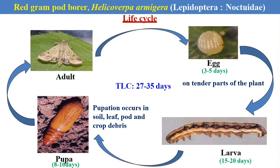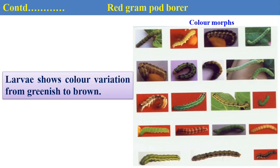The caterpillar or larva is the damaging stage; it attacks on different plant parts. After development, the larva goes into pupation, which occurs in soil as well as in leaf folds and crop debris. A typical characteristic of the larva of the red gram pod borer, Helicoverpa armigera, is color variation — from greenish to brown — in the larvae.